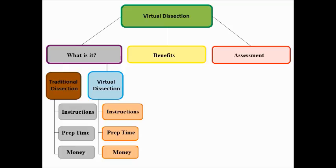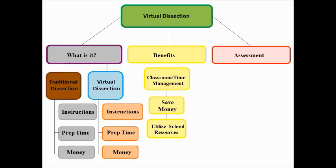Under benefits I've decided to do three other categories: class and time management, save money, and utilize resources. I've also decided to do these three subcategories in the same yellow color to associate them also with something that was good.